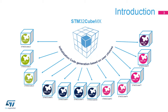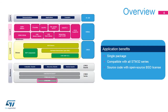Such as the STM32 Cube WB, with Hardware Abstraction Layer, or HAL, and Low Layer, or LL, APIs, and a consistent set of middleware components including RTOS, USB, TCP/IP, and graphics. The embedded software package is a layered approach.